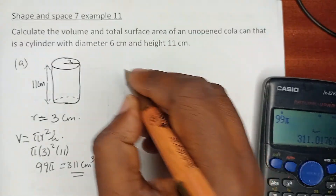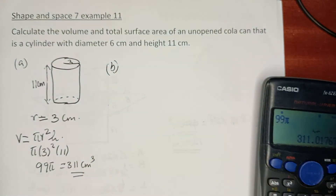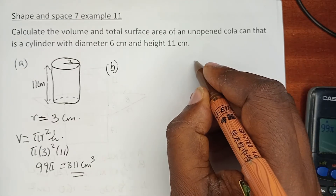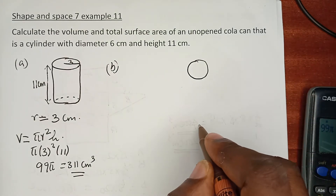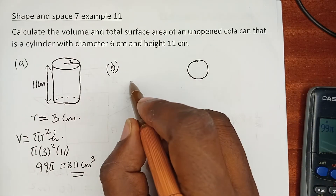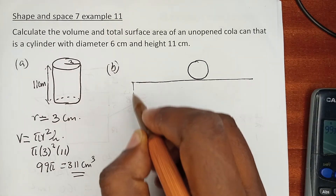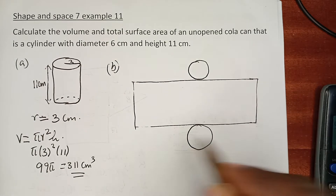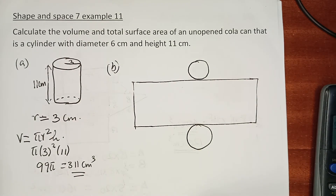Now that is part A. Part B is the surface area, and I want us to be very keen here. As we understood from the previous slide, the surface area of a cylinder consists of the area of the top circle, the area of the bottom circle — those two circles are equal — and when we unroll the curved surface, we form a rectangle.